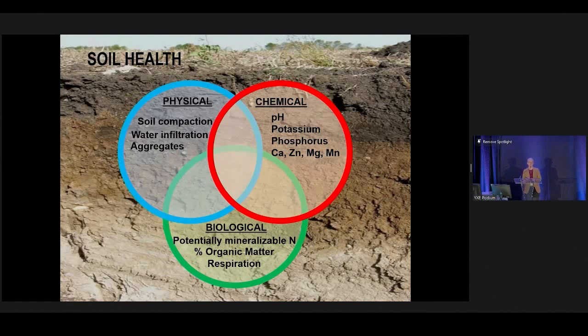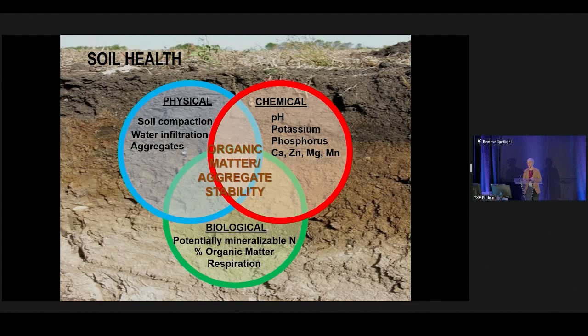When we talk about soil health and soil building, we're trying to improve the physical, chemical, and biological functions in the soil. These three types of functions are shown in a Venn diagram. When looking at the benefit of all of these working together, I'm looking for building organic matter — with the caveat that you can't build forever — but mostly I want to see building soil structure and aggregate stability. That's what I'm looking for in any situation.